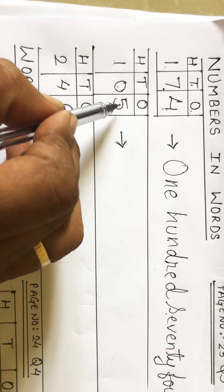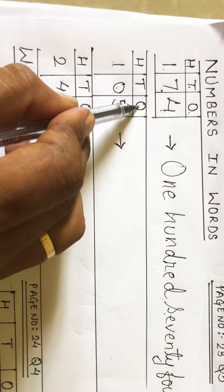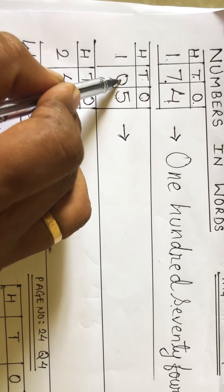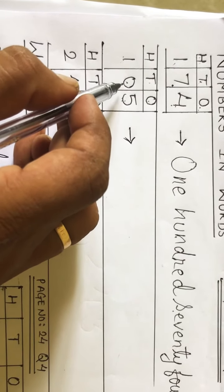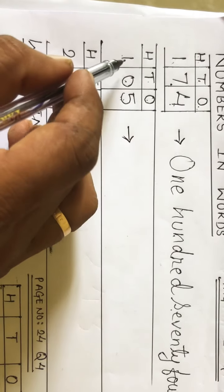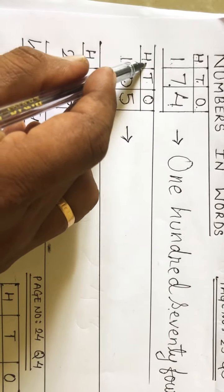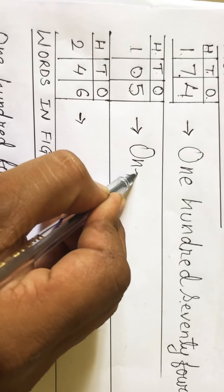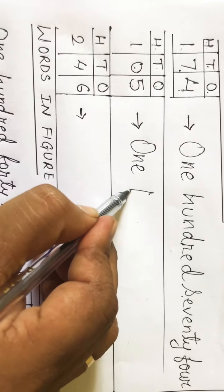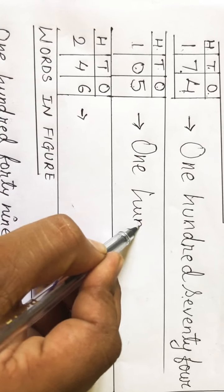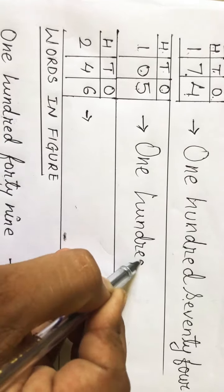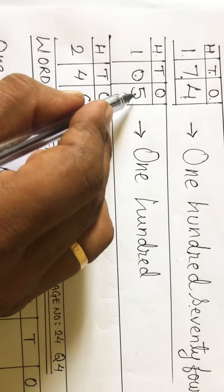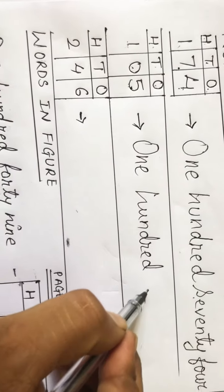Now see the next number: one zero five, which means one hundred five. Five is at ones place. Tens ki place pe zero hai — jis place pe zero aata hai, aapko us place ki value likhni hi nahi, leave it. One is at hundreds place, so we write 'one hundred,' skip tens, and go directly to ones place — write 'five.' So the answer is 'one hundred five.'